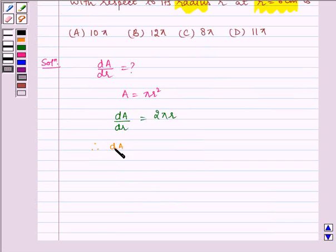Therefore, dA/dr at r = 6 equals 2 × π × 6, which equals 12π.